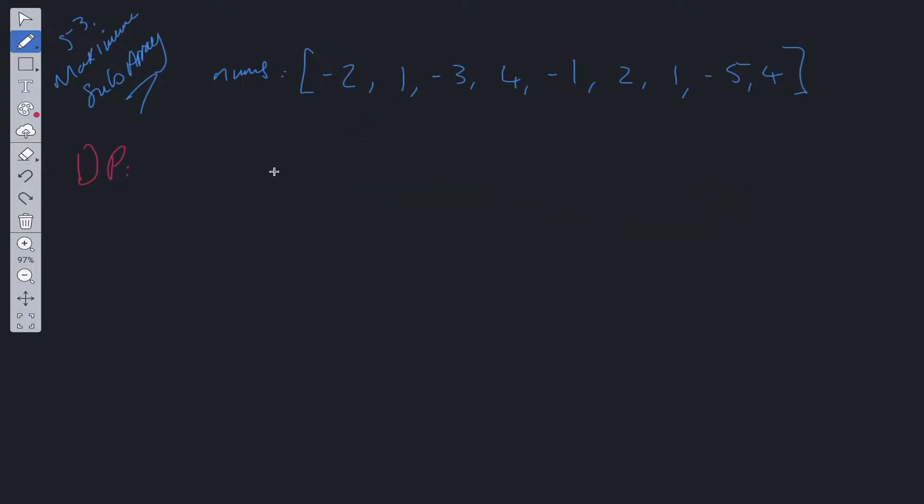So let's work through a DP solution. In order to work out the total maximum, we need to work out the current maximum. So we need to work out the maximum from this point. Let's call this DP array current max. Now what is the maximum value at nums at 0 index? Well it's minus 2, right? So the maximum at this point is also minus 2.